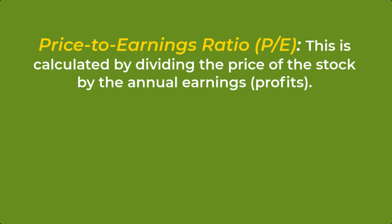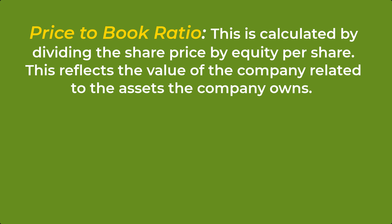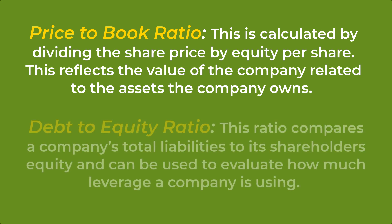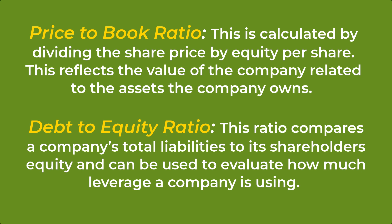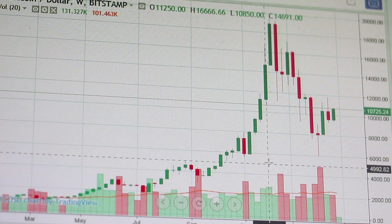Some of these include: Price to Earnings ratio, calculated by dividing the price of the stock by the annual earnings — a low PE may indicate undervalued, while a high PE can mean overvalued. Price to Growth ratio, calculated by dividing the PE ratio by the earnings growth rate over a specific period. Price to Book ratio, calculated by dividing share price by equity per share, reflecting the value of company assets. And Debt to Equity ratio, which compares total liabilities to shareholders' equity — higher leverage ratios tend to indicate higher risk to shareholders.